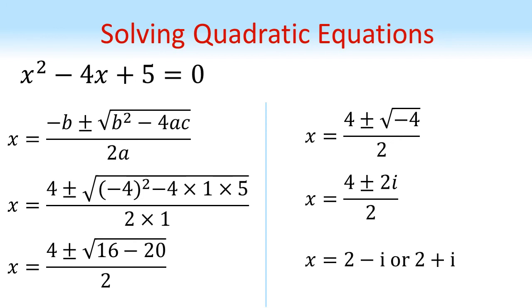Dividing by the 2 gives us x equals 2 minus i or 2 plus i. So this equation doesn't have any real solutions, but it does have two complex solutions which we've just found.